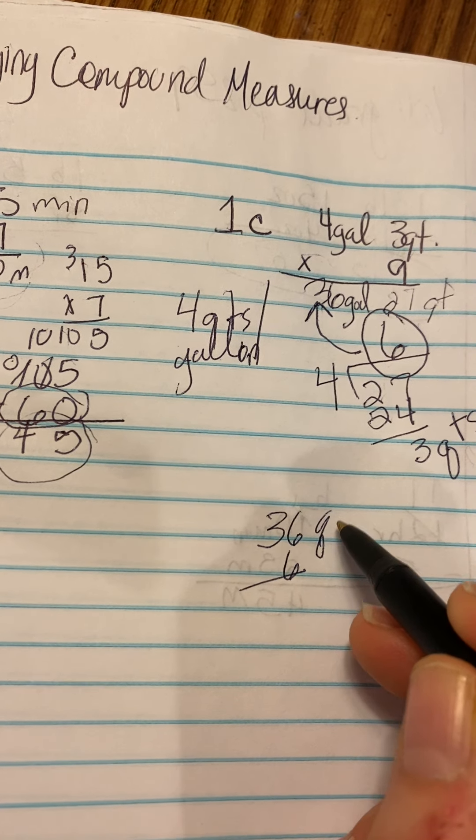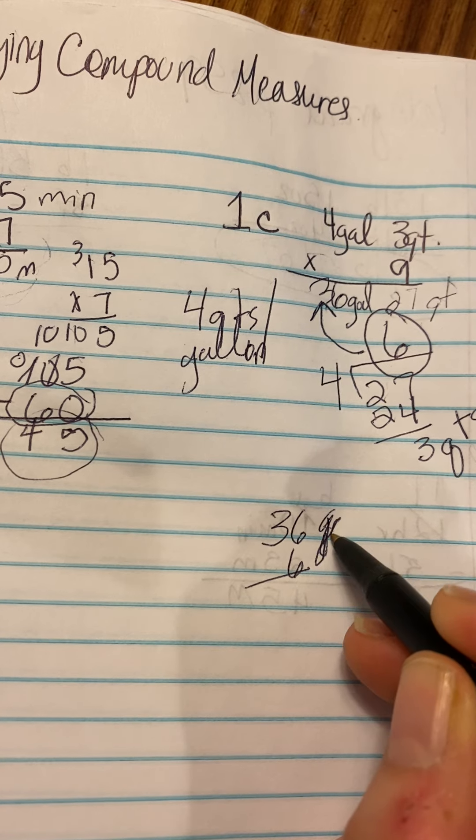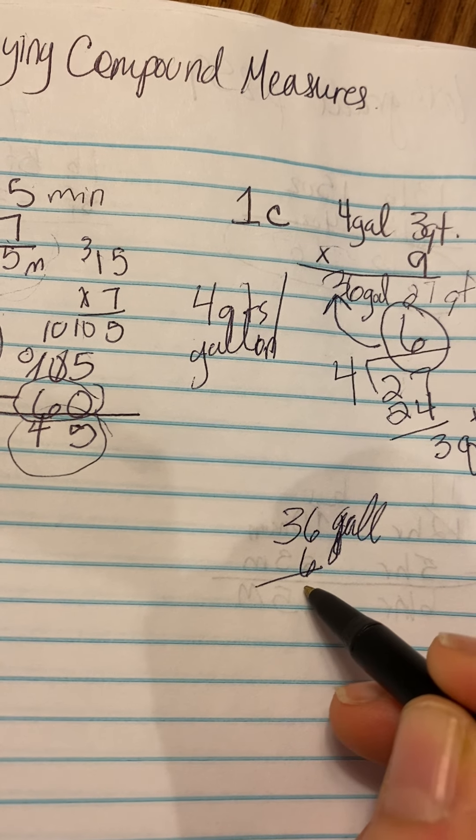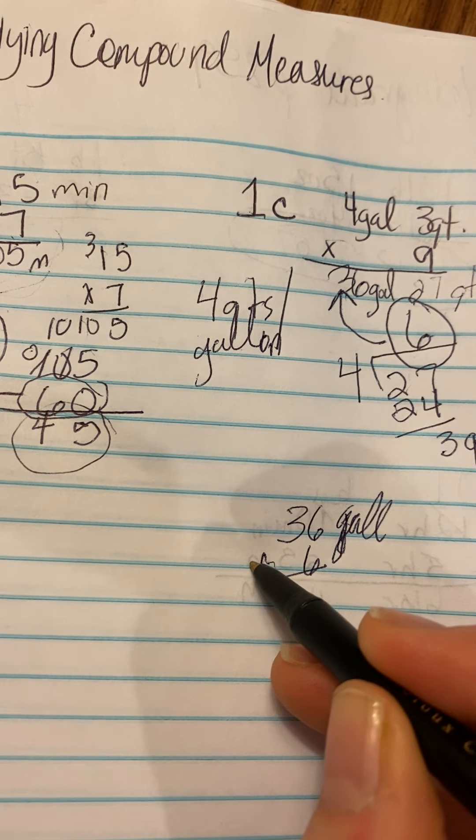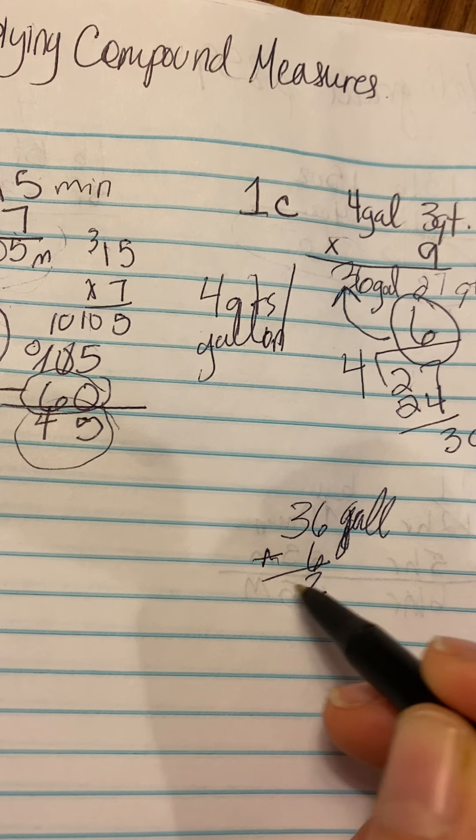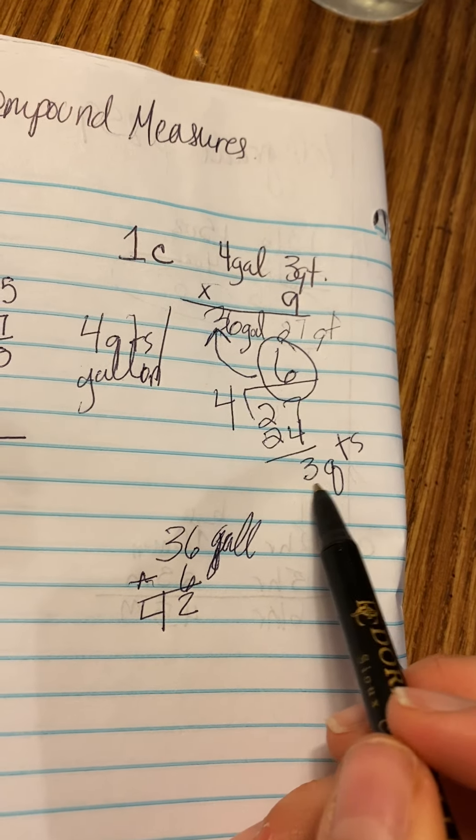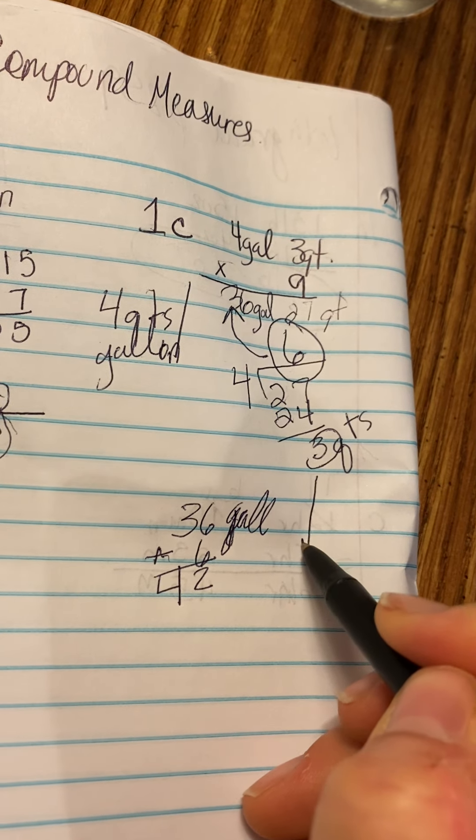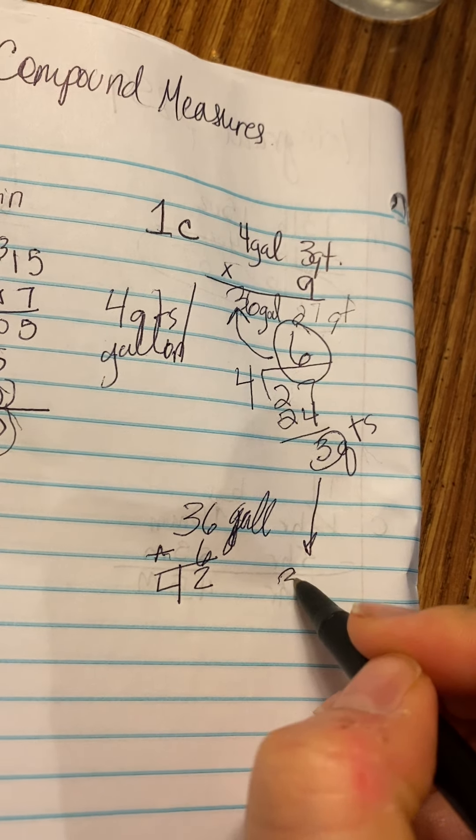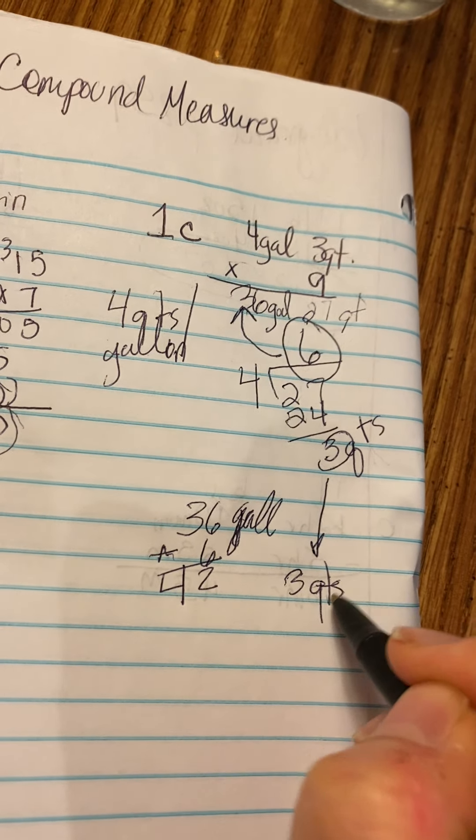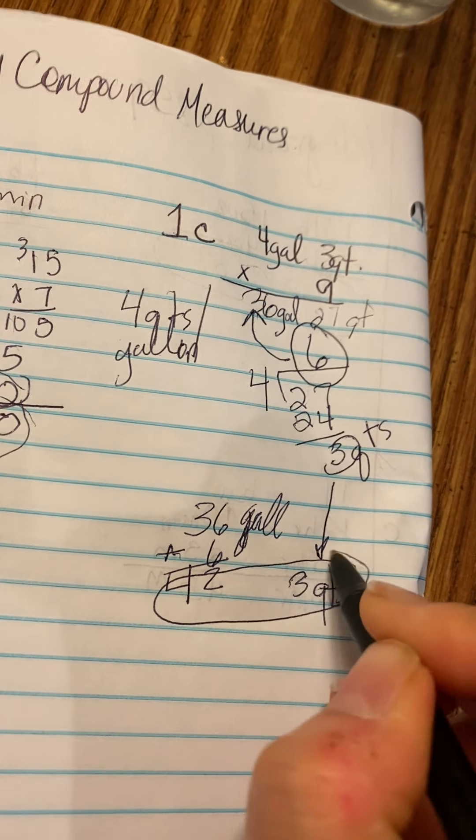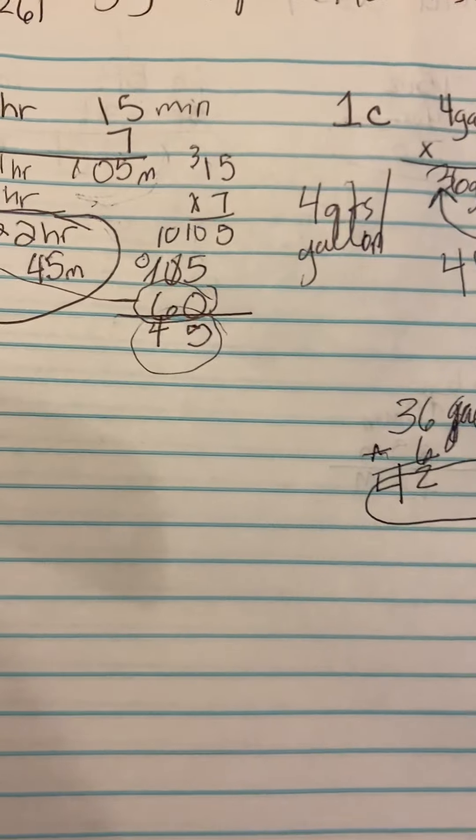This is quarts. I'm sorry, gallons. And this is just adding. And then what did we have left over? 3 quarts. And that's going to go here. 3 quarts. And that is our final answer. Hope that helps, guys.